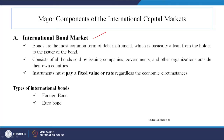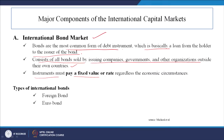Another component of the international capital market is the international bond market. Bonds are the most common form of debt instrument — basically a loan from the holder to the issuer of the bond. The international bond market consists of all bonds sold by issuing companies, governments, and other organizations outside their own countries. If you buy a bond at a 10% rate, after a certain period the holder of the bond receives a desired sum of money. Instruments must pay a fixed value or rate regardless of economic circumstances.